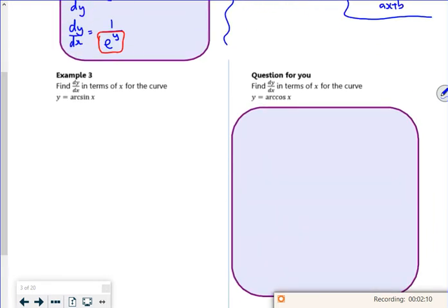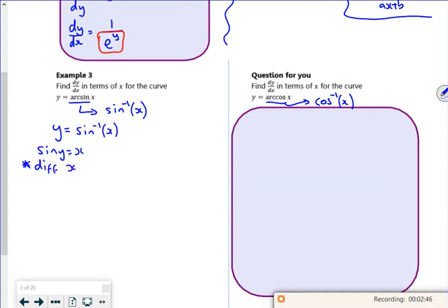Right, so example 3. It says find dy/dx in terms of x for y equals arcsin x. Arc cos and arc sine is just the inverse, so sine to the minus 1, cos to the minus 1. So what I've really got is sine inverse of x. If I rearrange it, if I move the sine over, I've got sine y equals x. So I want to differentiate x equals sine y.